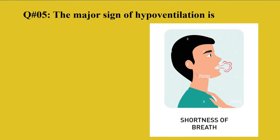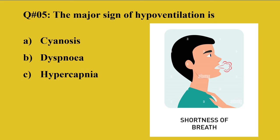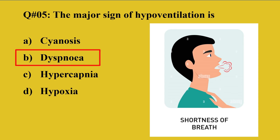Question 5: The major sign of hypoventilation is A: Cyanosis, B: Dyspnea, C: Hypercapnia, D: Hypoxia. The right option is dyspnea. In hypoventilation, when there is a deficiency of oxygen, there is shortness of breath, known as dyspnea, which can eventually lead to death due to unavailability of oxygen to the cells. It may also lead to a hypoxic condition where cells and organs do not get sufficient oxygen.